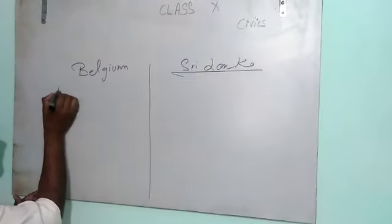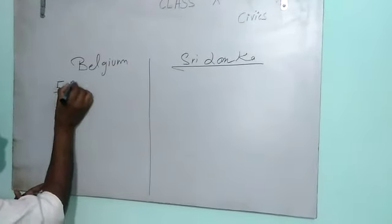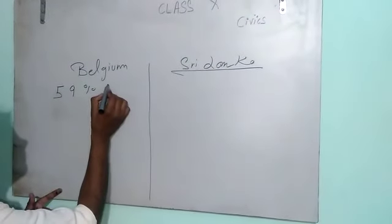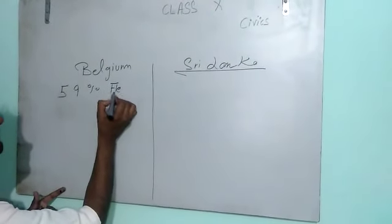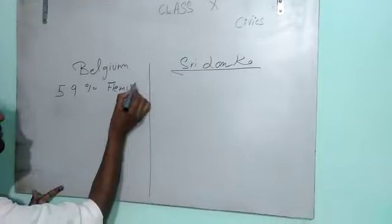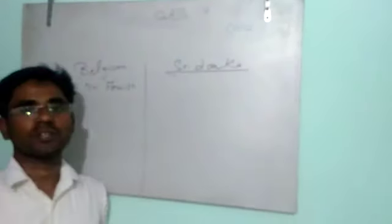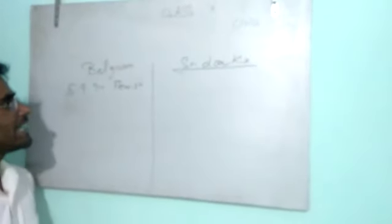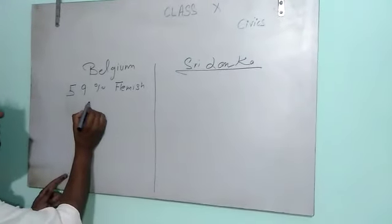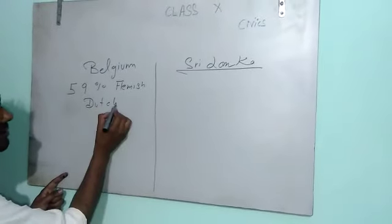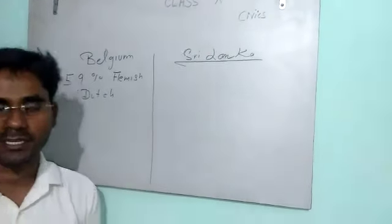We will see that 59% of the population lives in the Flemish region and they speak Dutch.